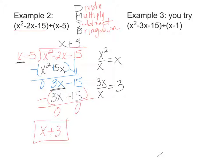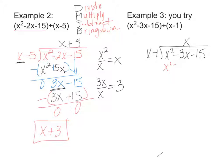Go ahead and pause the video and try that second problem. You're going to get a remainder, so turn the video back on once you finish. You should have set the problem up like this: X minus 1 goes into X squared minus 3X minus 15. X squared divided by X is X. X times X is X squared, and X times negative 1 is negative X. Then I subtract — this becomes 0, and negative 3X minus negative X gives me negative 2X — and I bring down my negative 15.